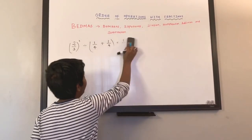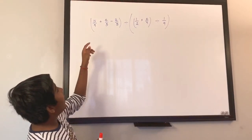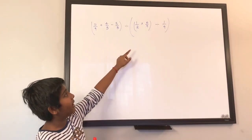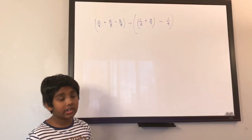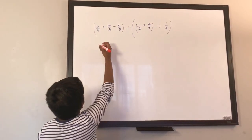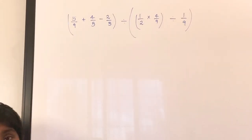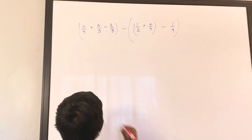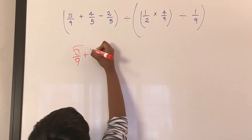Let's do one more question — the final example: 5 over 9, plus the bracket 4 over 5 minus 2 over 5, divided by the bracket 1 over 2 times 4 over 9, divided by 1 over 9. Remember, brackets always come first. Inside the first bracket, 4 over 5 minus 2 over 5 — these two fractions have the same denominator, so 4 minus 2 equals 2, giving us 2 over 5. So now we have 5 over 9 plus 2 over 5.